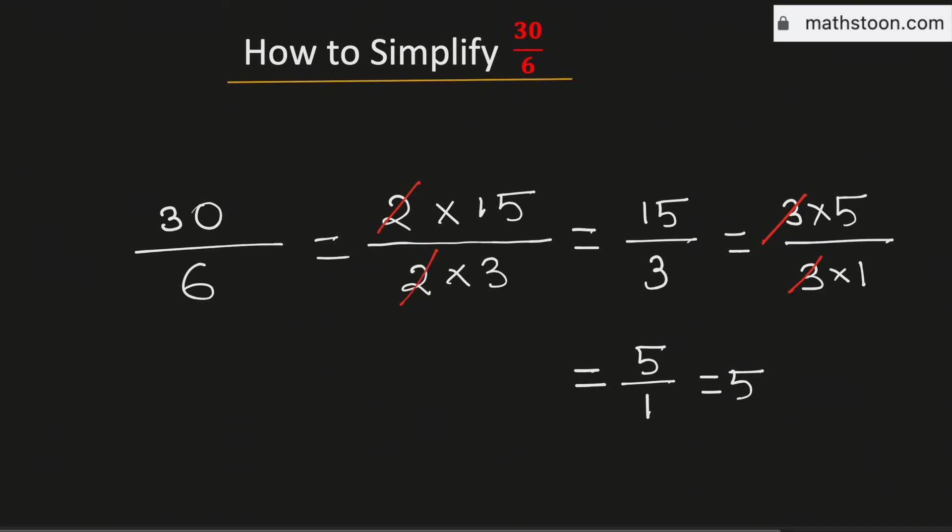Therefore 5 is the simplified form of the fraction 30 over 6 and this is our final answer. Thank you.